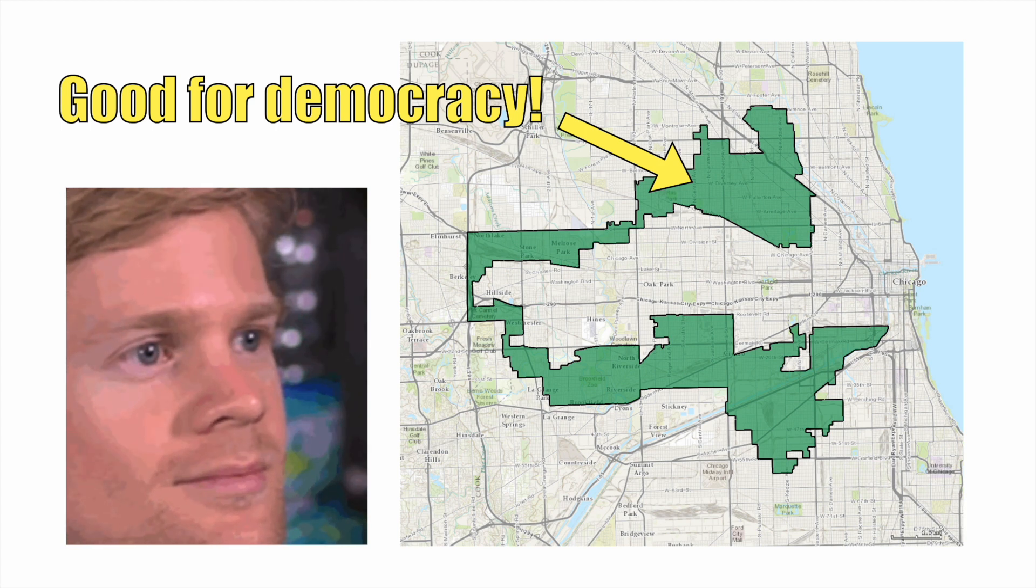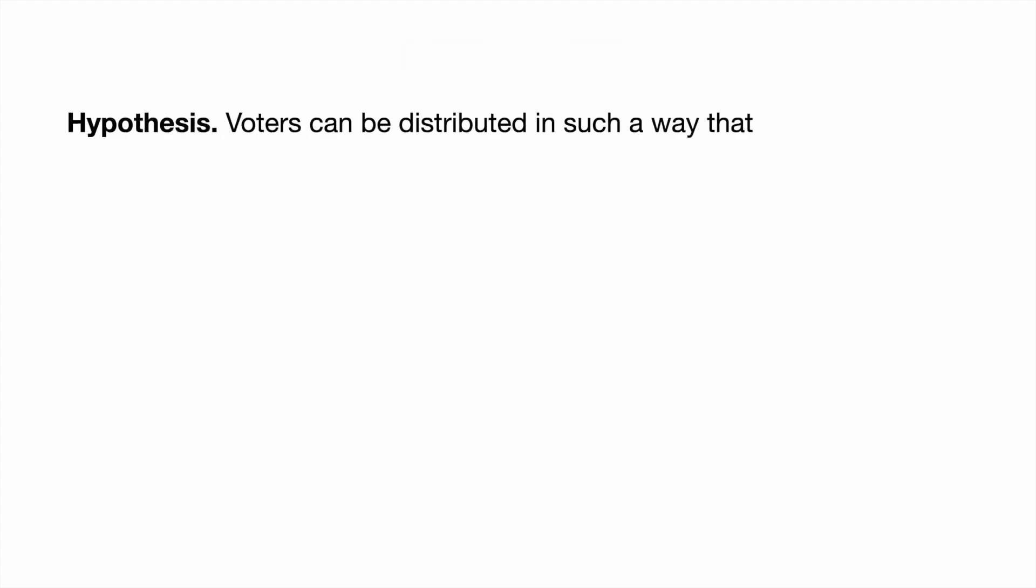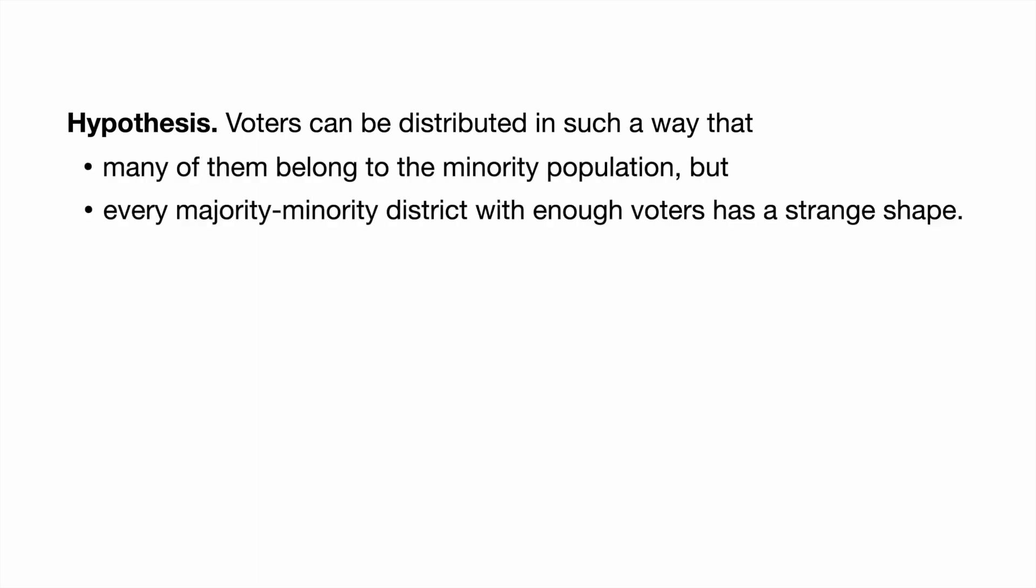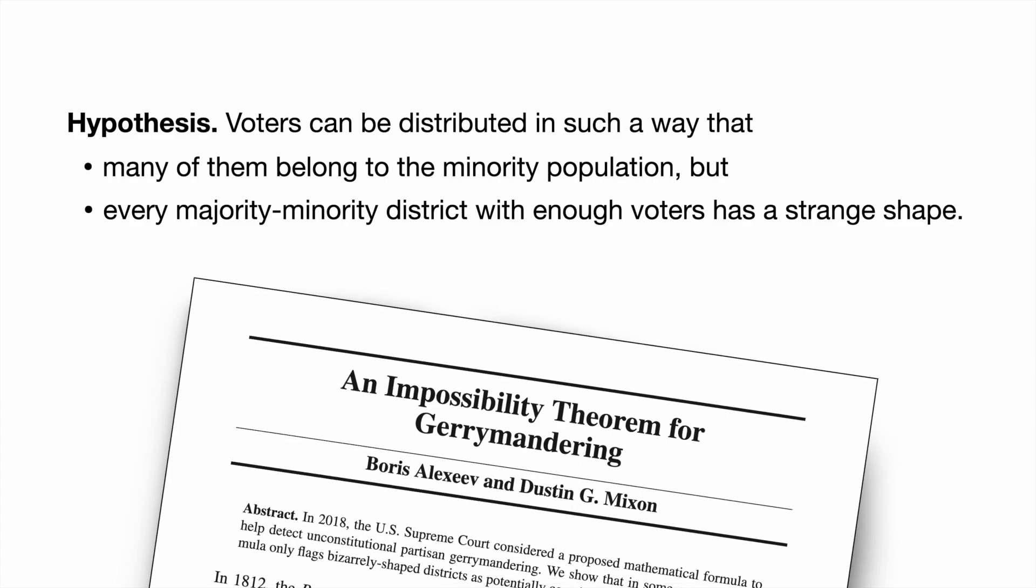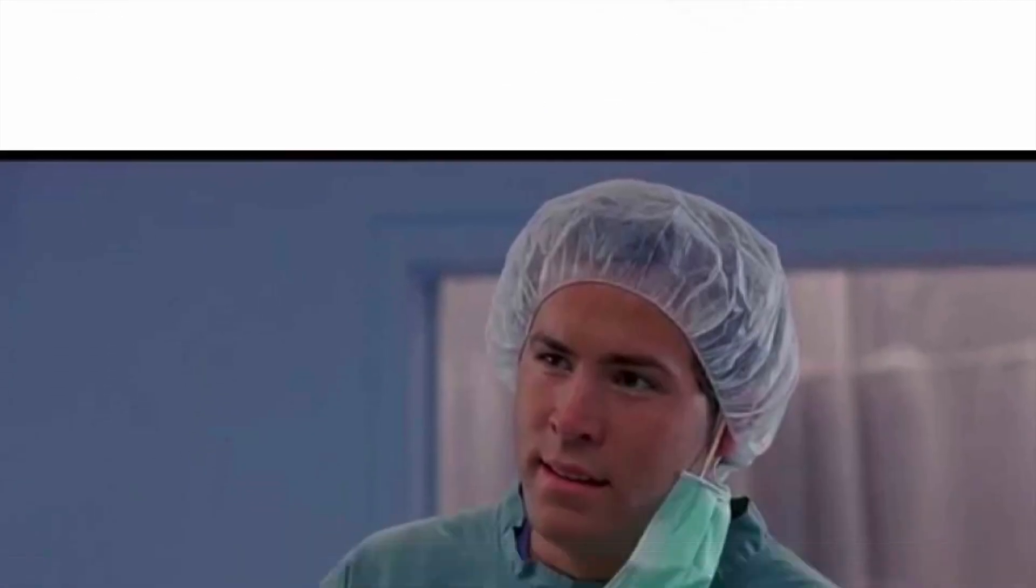Let's refine this thought with a hypothesis. Maybe voters can be distributed in such a way that many of them belong to the minority population, but every majority-minority district with enough voters has a strange shape. This is the essence of a recent impossibility theorem for gerrymandering. So, why does this happen?